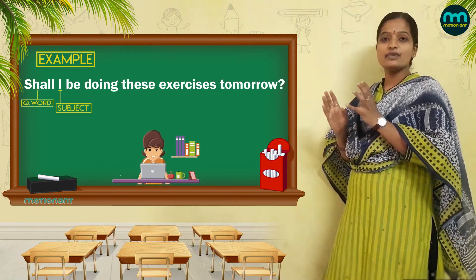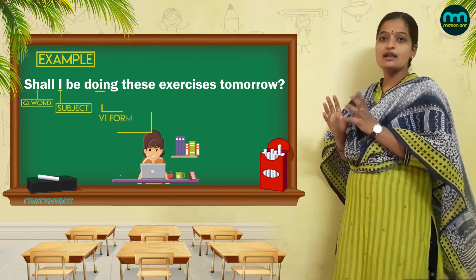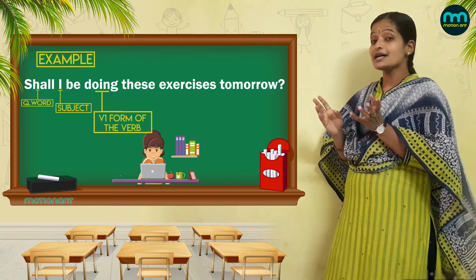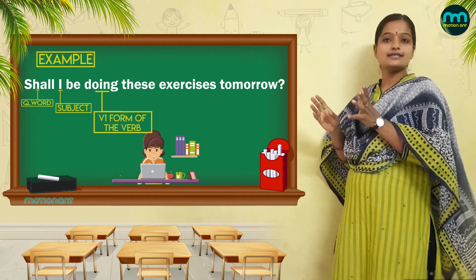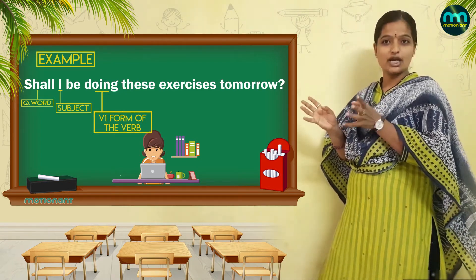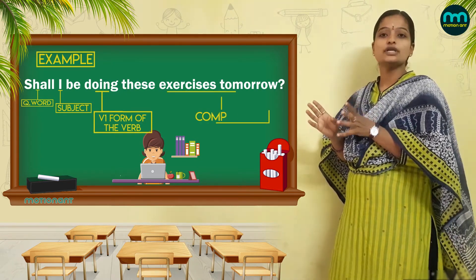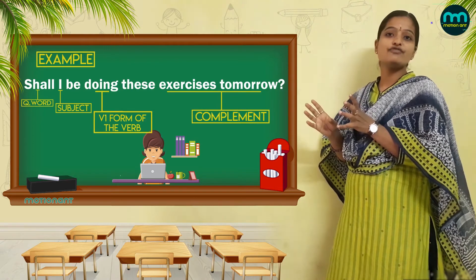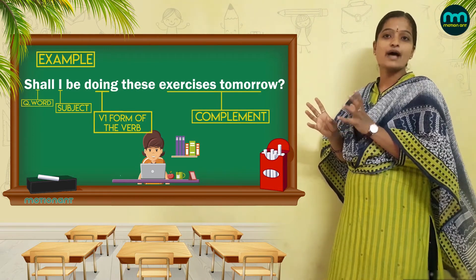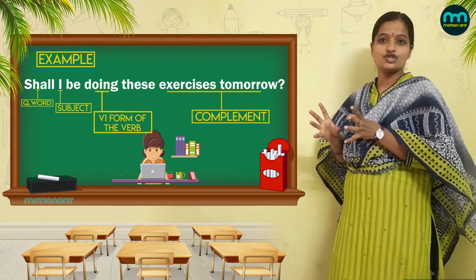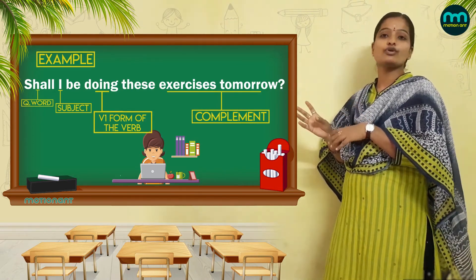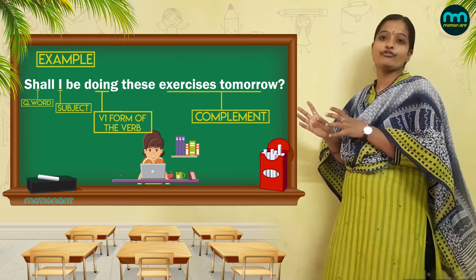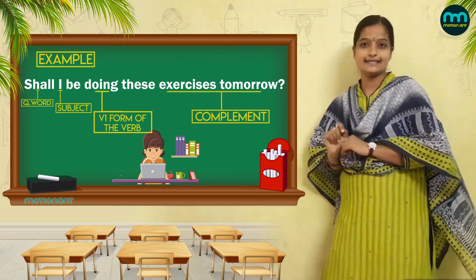Here, we are beginning with shall because it is a question, and I is the subject. And doing — do is the V1 form of the verb with -ing added. And the exercises tomorrow is the complement of the sentence.